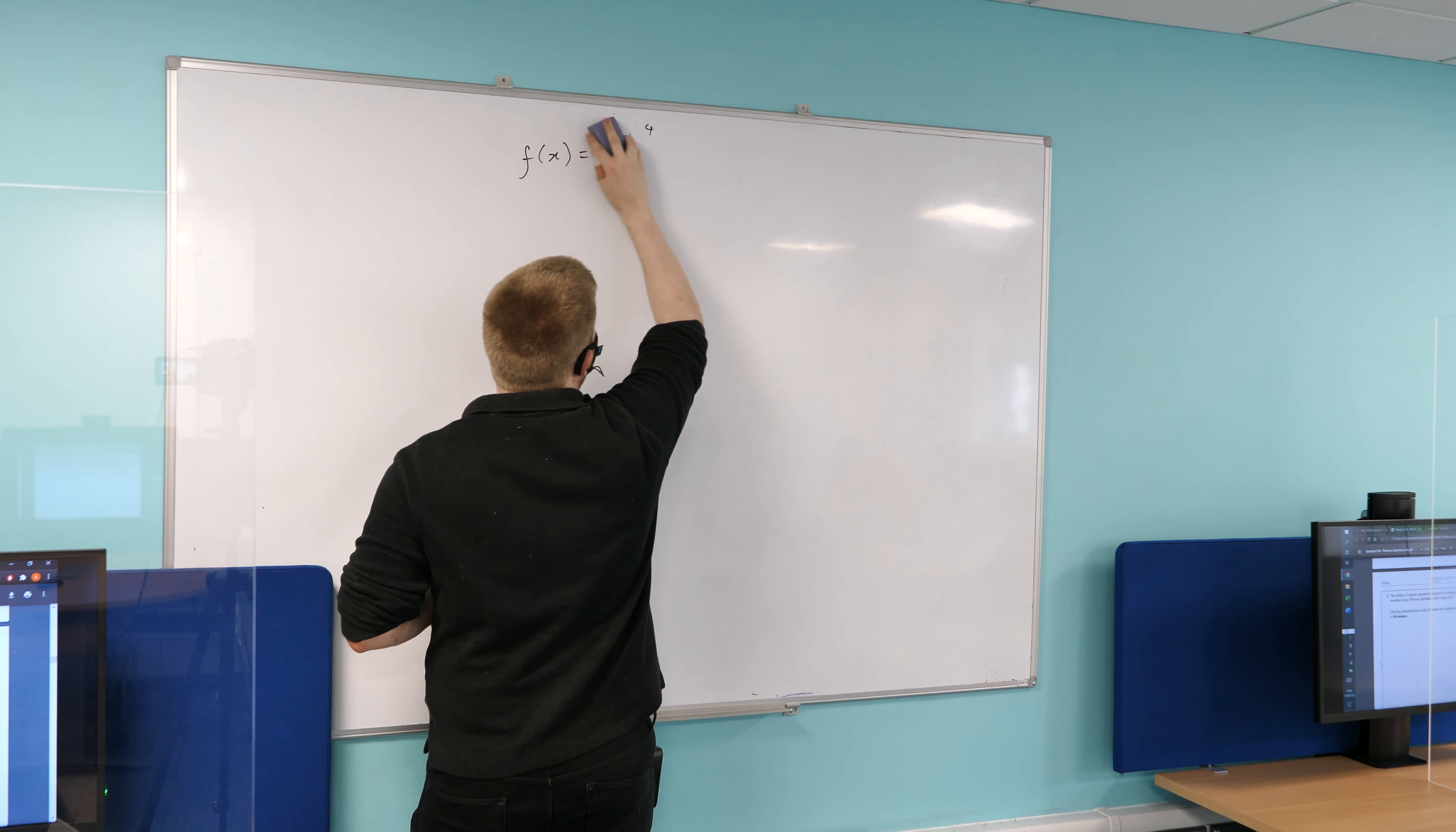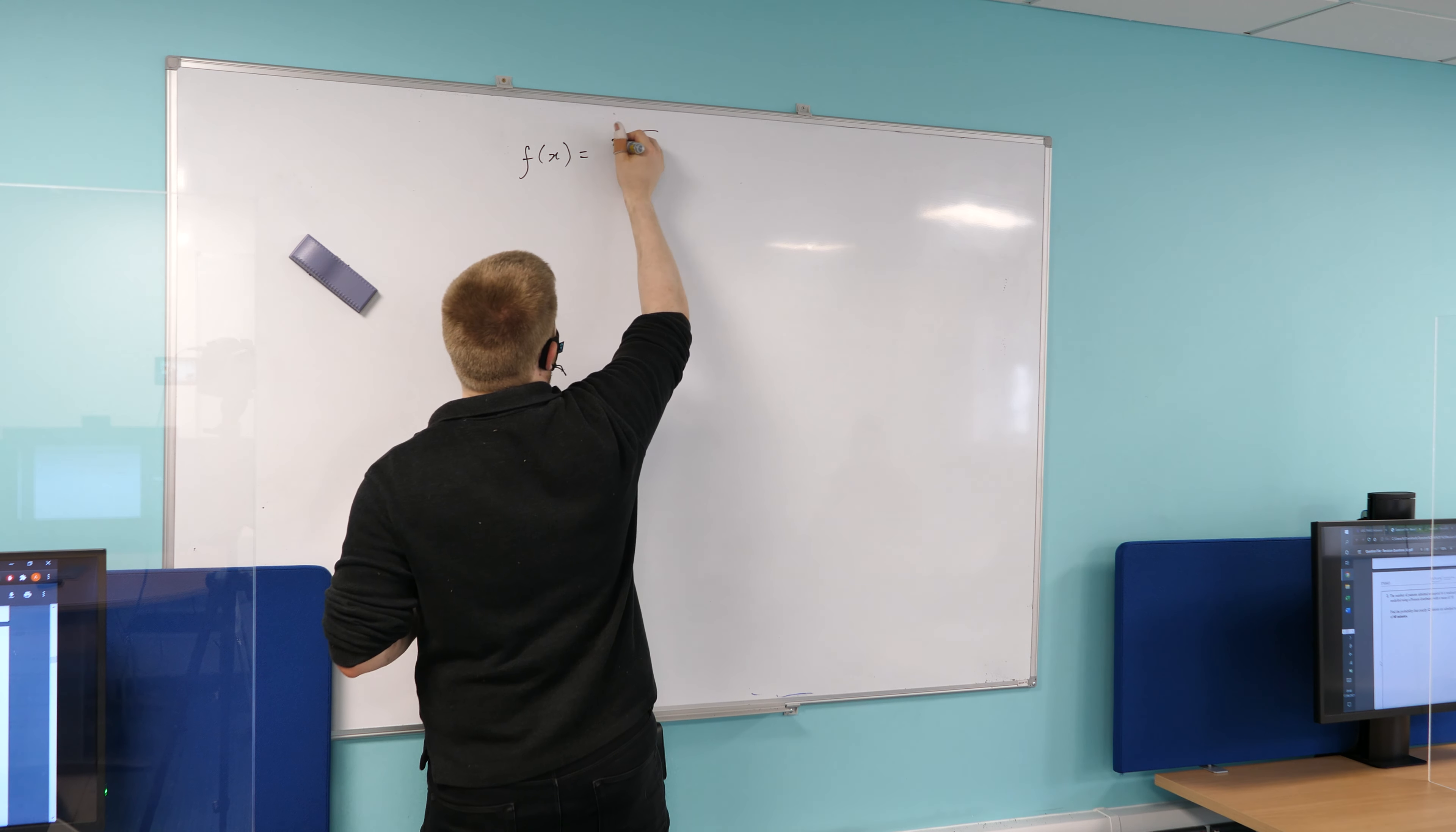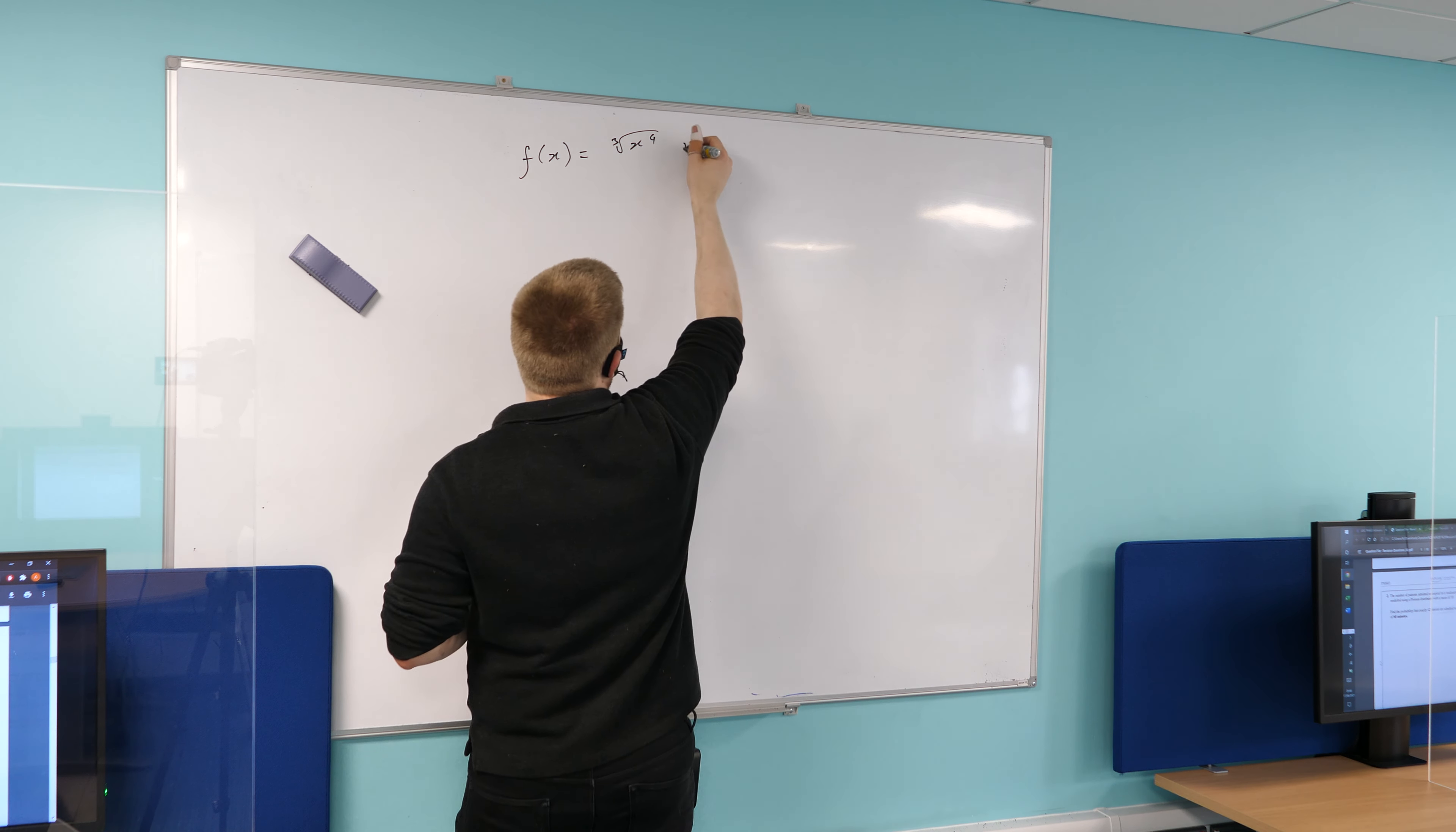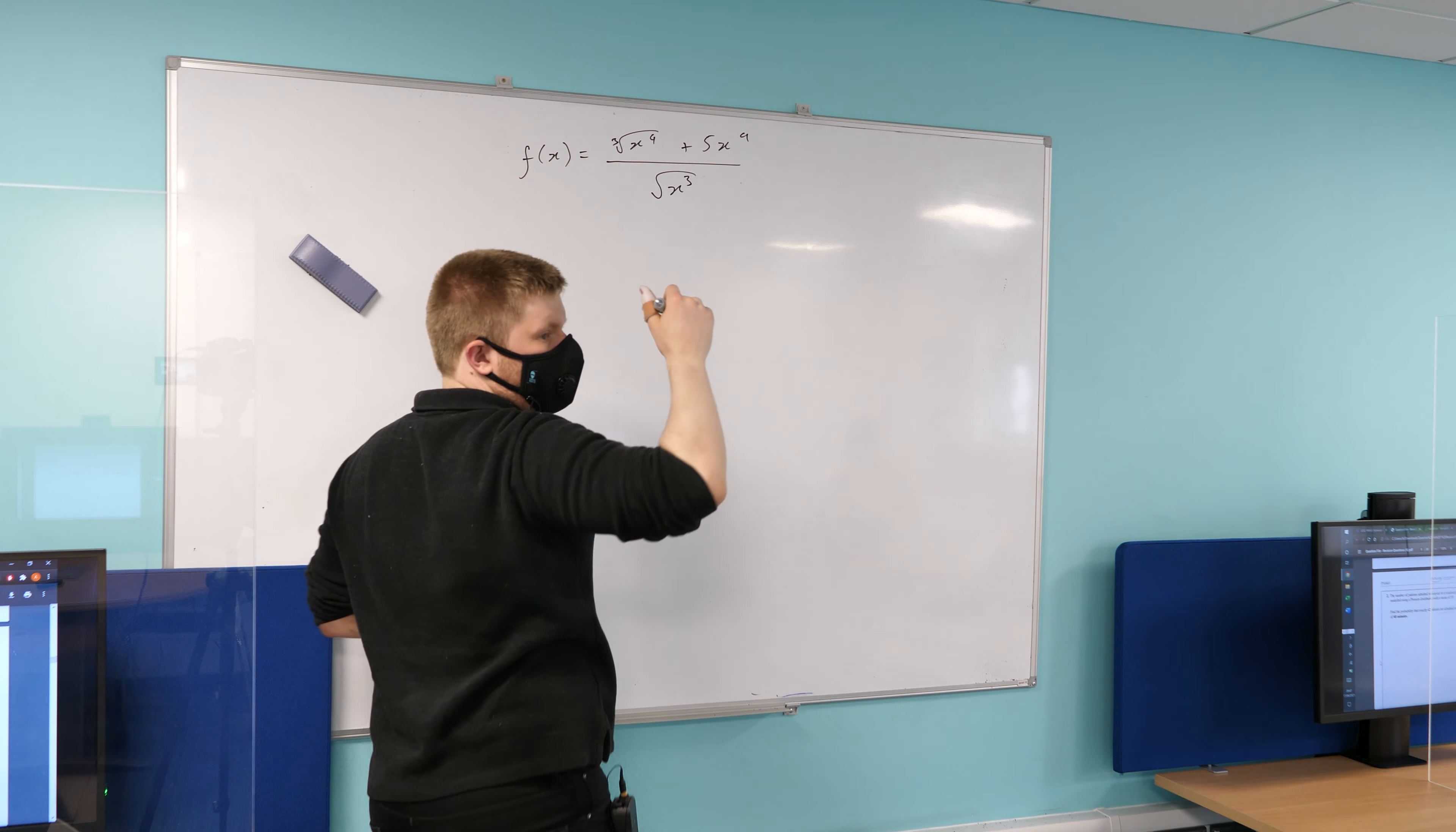So it's the third root. Third root of x to the power of 4, so x to the power of 4 over 3. Like that? Exactly, yeah. Plus 5x to the power of 9. Yep. Divide it by the square root of x to the power of 3. Like so. Yeah.